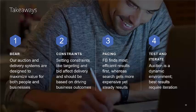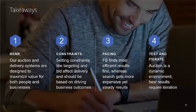And finally, test and iterate. The ad auction system is dynamic — different people are online at different times, and different audiences shift and change. I like to equate it to financial markets. The best results will require testing, iterating, and retesting. I hope you enjoyed the webinar. There should be a short survey available in a moment that you can take to let us know how you thought we did.